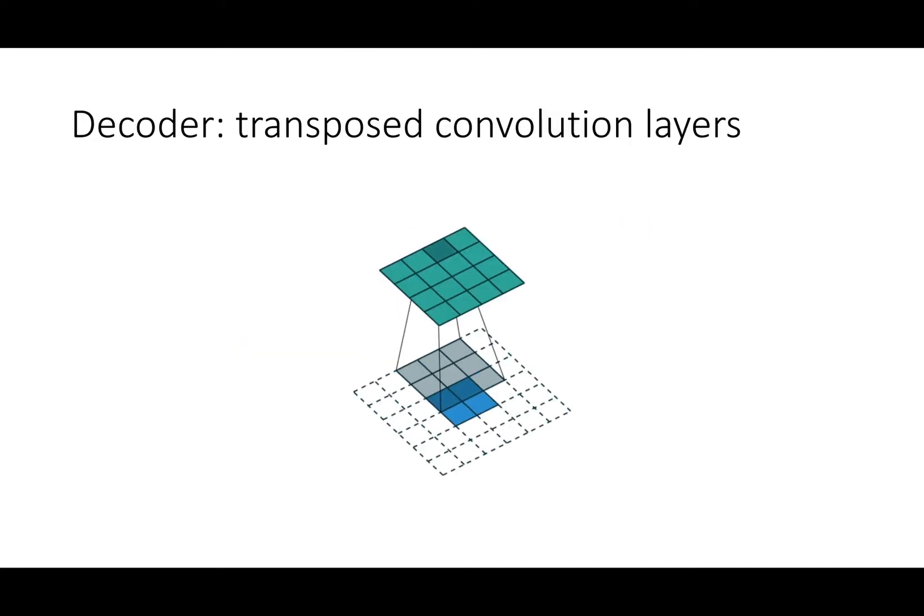Next, the decoder consists of transpose convolutional layers. The transpose convolutional layers is exactly the same as convolutional layers, except it reverses the inputs and outputs. As we can see in this animation, it maps a smaller feature map to a larger feature map. It is used in the final part of the FCN.